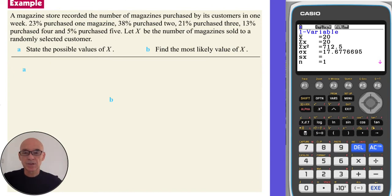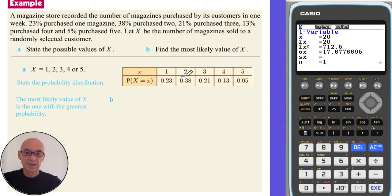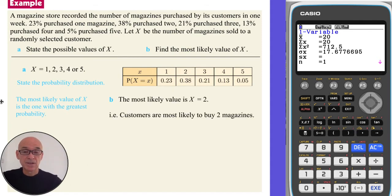In this question we're first asked to state the possible values of X, the random variable. The number of magazines sold can be anything from one to five, so those are the values of X. Then we state the probability distribution in a table, converting all the percentages into decimals. The most likely value of X is the one with the greatest probability, which is 0.38, so X equals two. In other words, customers are most likely to buy two magazines.